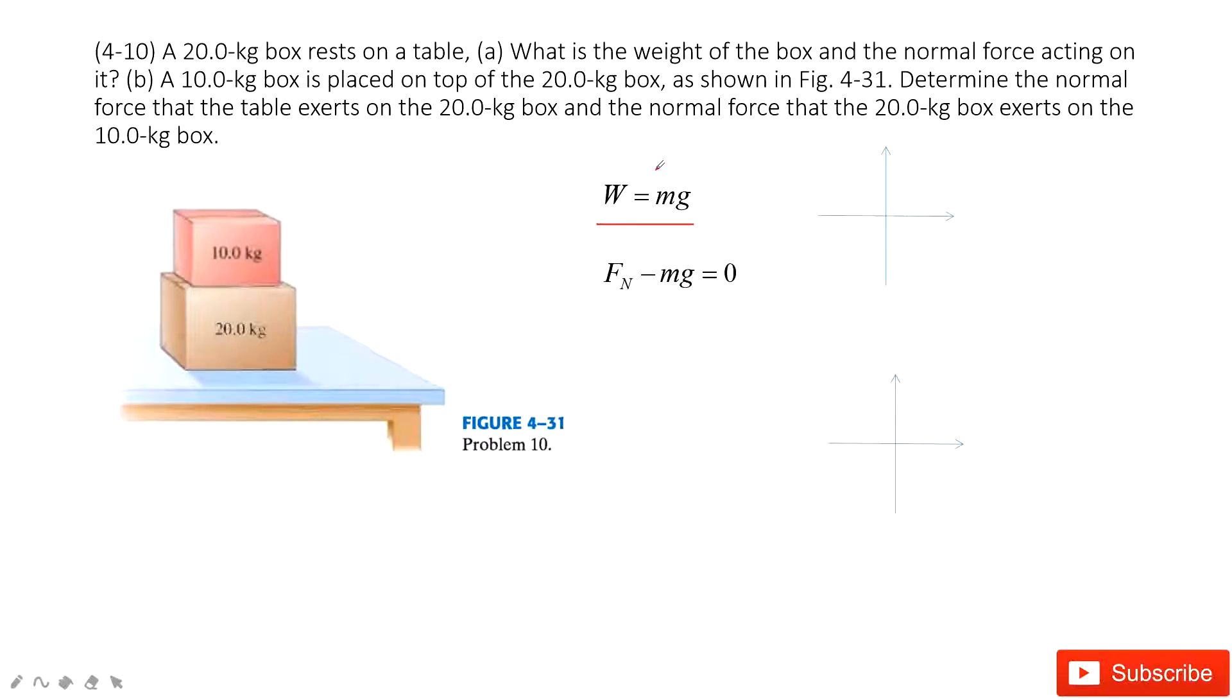The second question is a little bit more difficult. It tells us we put another box, 10 kg, on top of this 20 kg box. So we give them numbers—this is box 1, this is box 2.